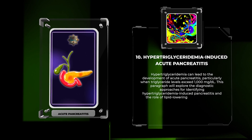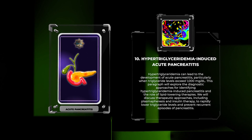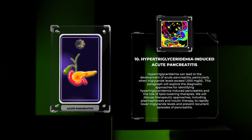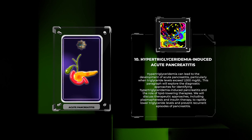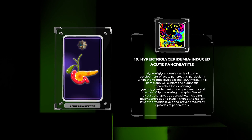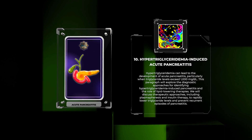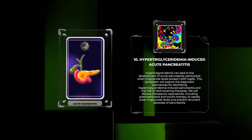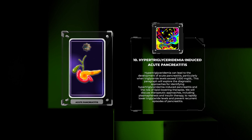Hypertriglyceridemia can lead to the development of acute pancreatitis, particularly when triglyceride levels exceed 1000 mg/dL. Diagnostic approaches for identifying hypertriglyceridemia-induced pancreatitis and the role of lipid-lowering therapies are explored. Therapeutic approaches include plasmapheresis and insulin therapy to rapidly lower triglyceride levels and prevent recurrent episodes of pancreatitis.